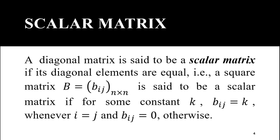In the square matrix, all elements with the same row suffix and column suffix are the diagonal elements. The condition here is that all diagonal elements — elements with the same row suffix and column suffix — are equal to some real number k, and all remaining non-diagonal elements must be 0.